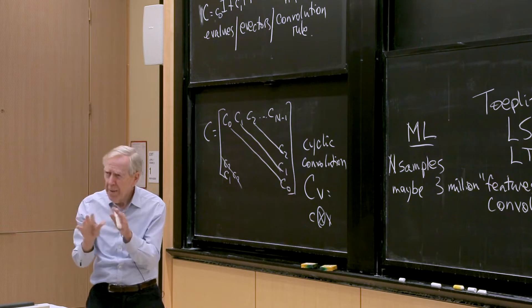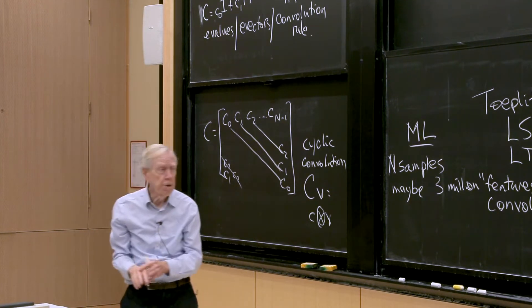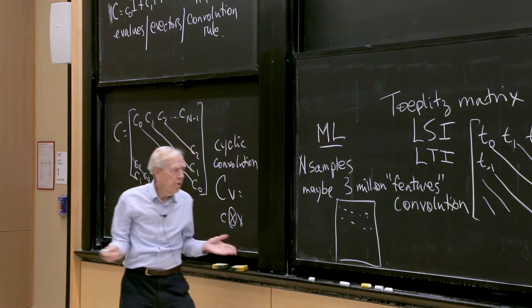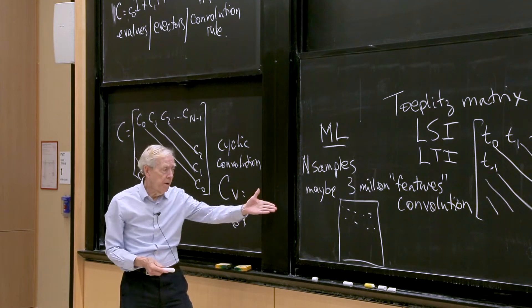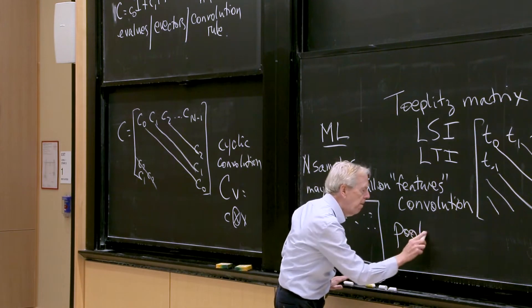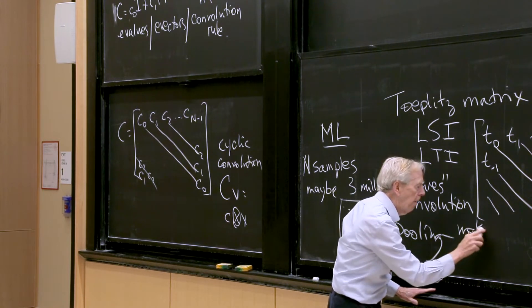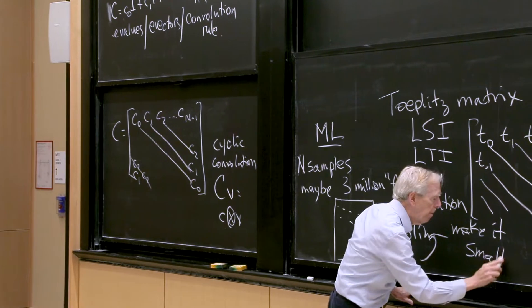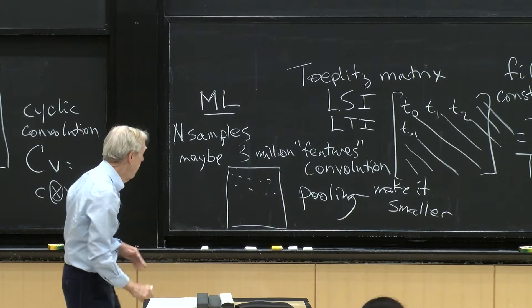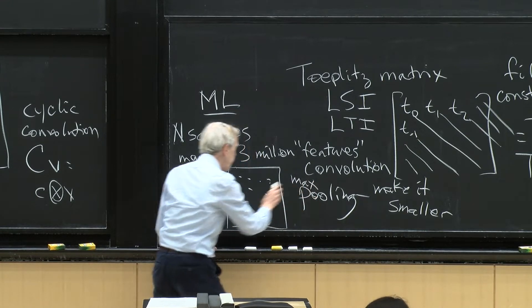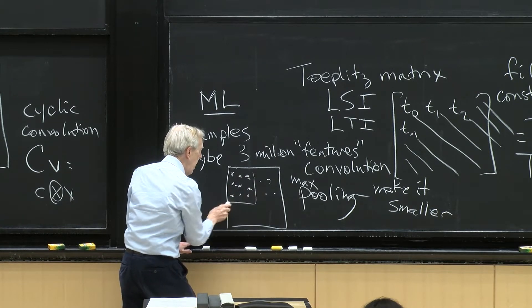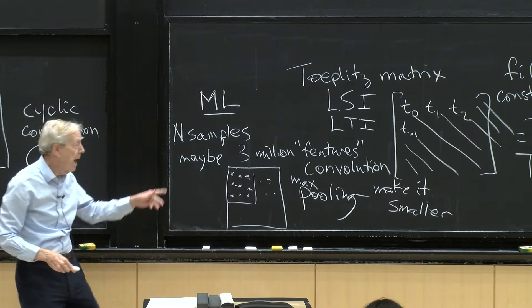These come up in machine learning and image processing basically because what you're doing at one point in an image is pretty much what you're going to do at other points. You're not going to figure out special weights for each little pixel — you're going to use the same operation. If you have an image with zillions of pixels, you might want to do some max pooling to make it smaller.